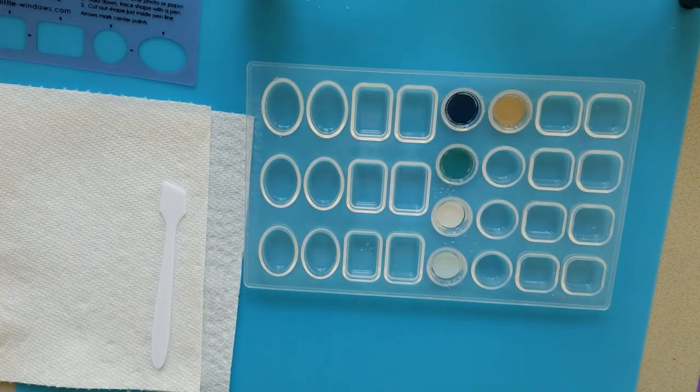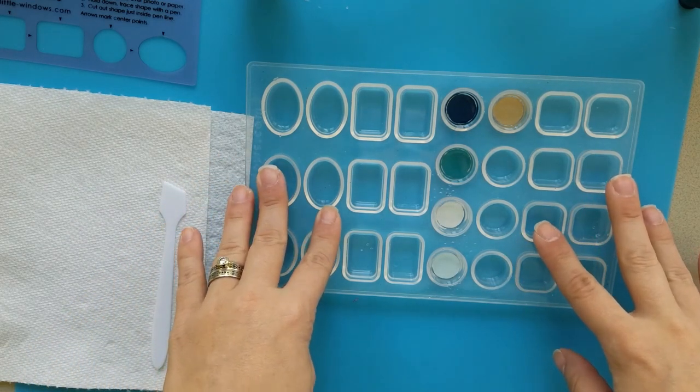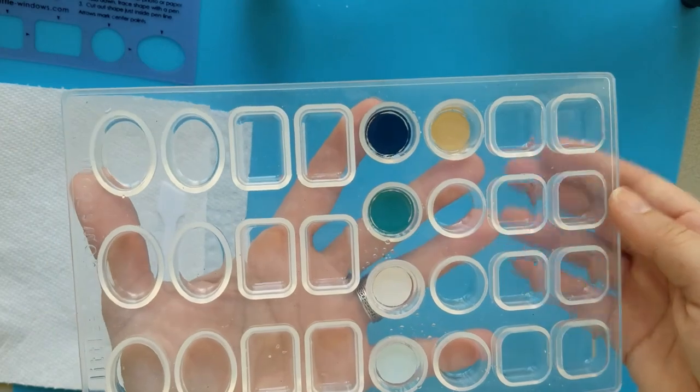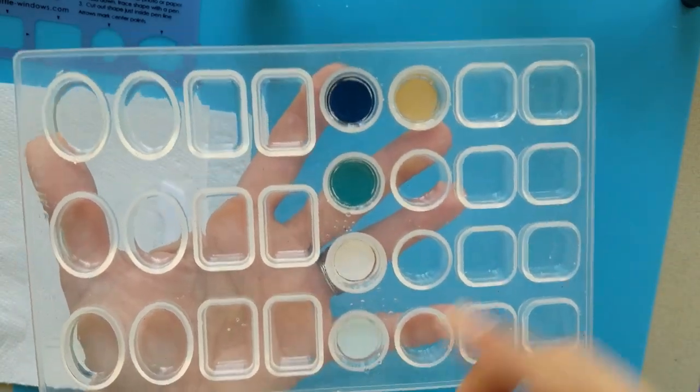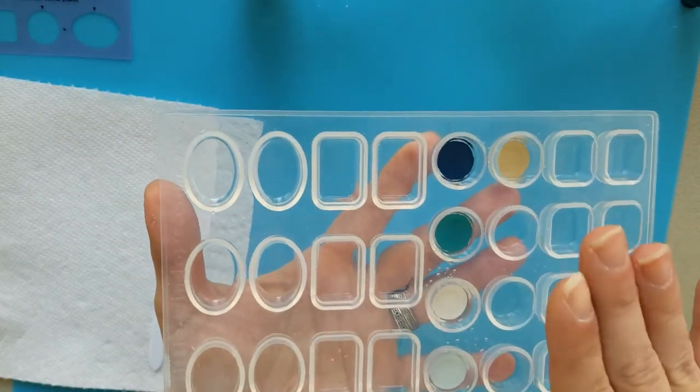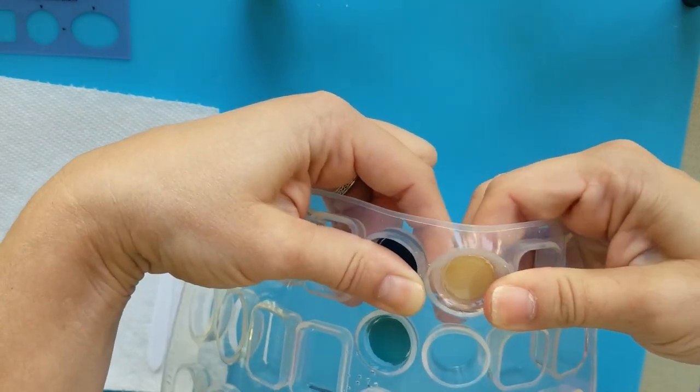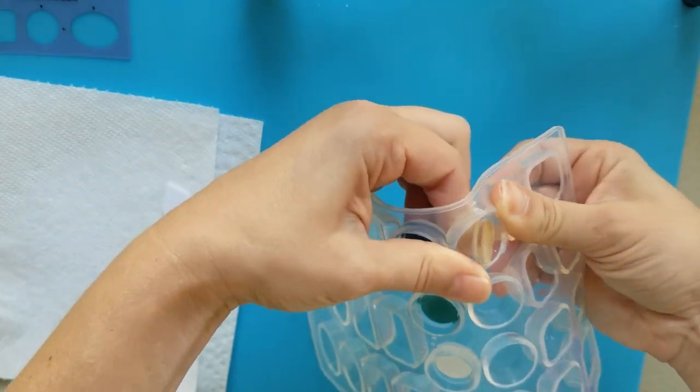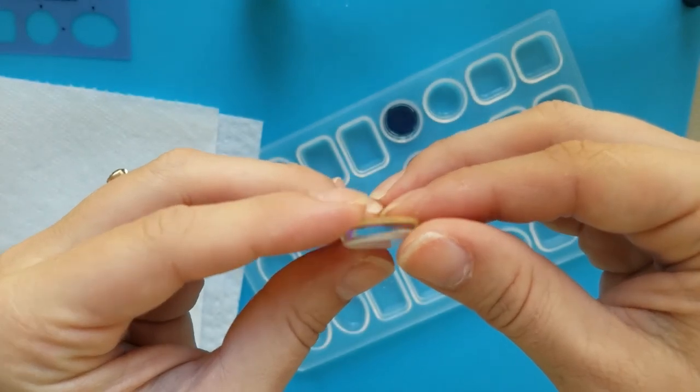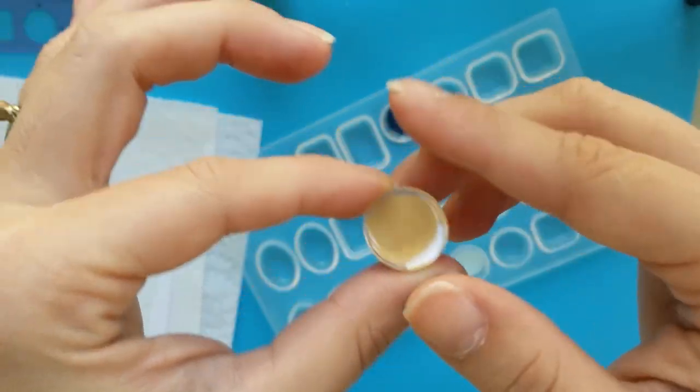Today is the day we get to take these lovely charms out of this wonderful mold. Let's get started. So yesterday, we put our clear layer, we put our little pieces of paper that I had used the template for from LittleWindows.com. So let's see how they did. It's very, very clear, you can see. Very hard.